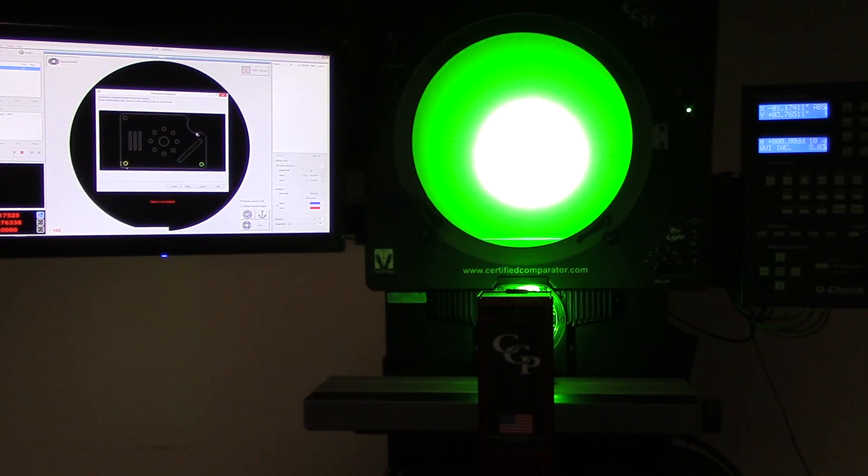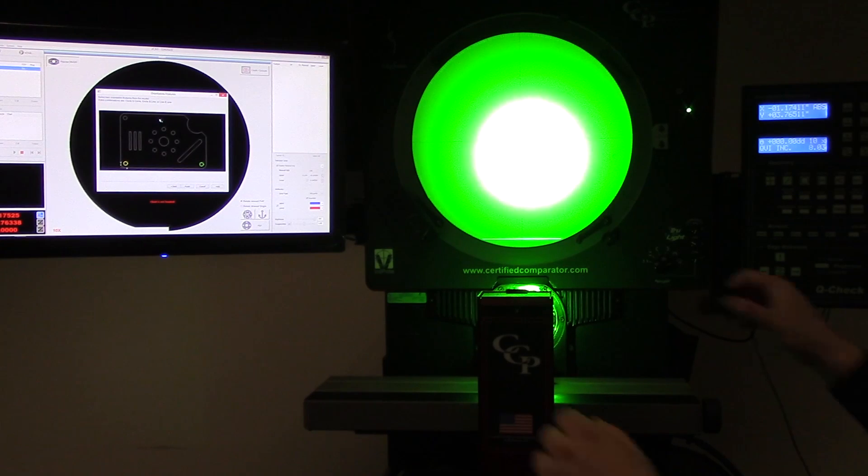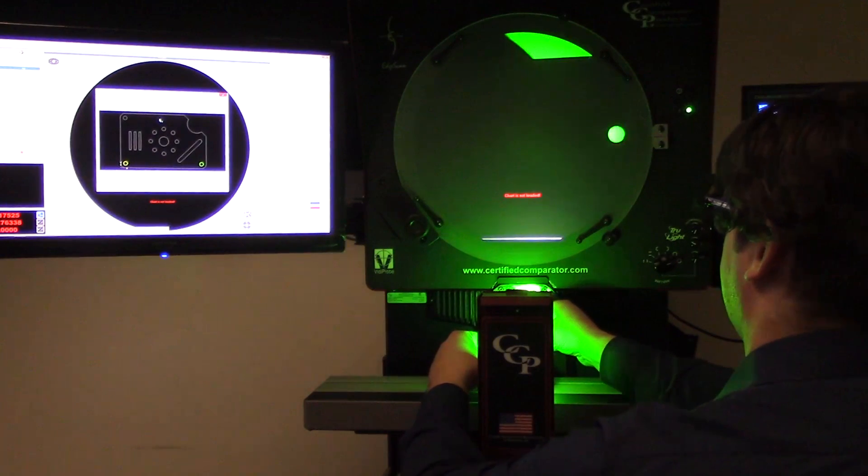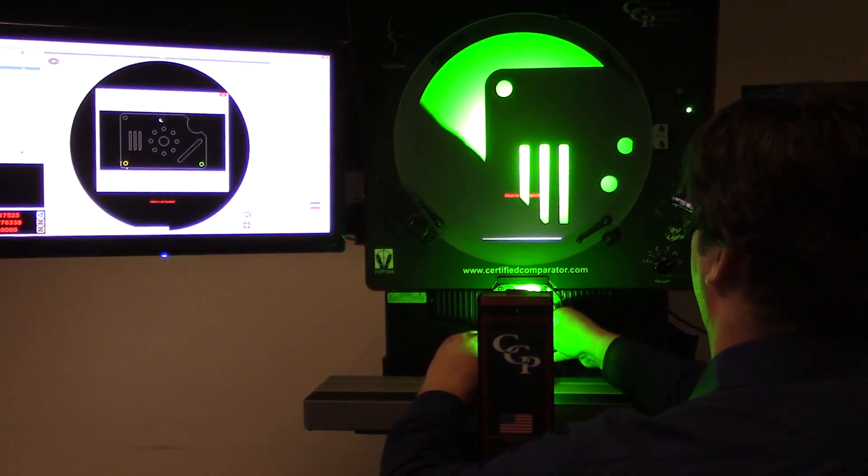Using ECAD is as easy as one, two, three. The first step is to import your CAD file into the software. Secondly, place your part on the stage. Make sure that your part is in focus.